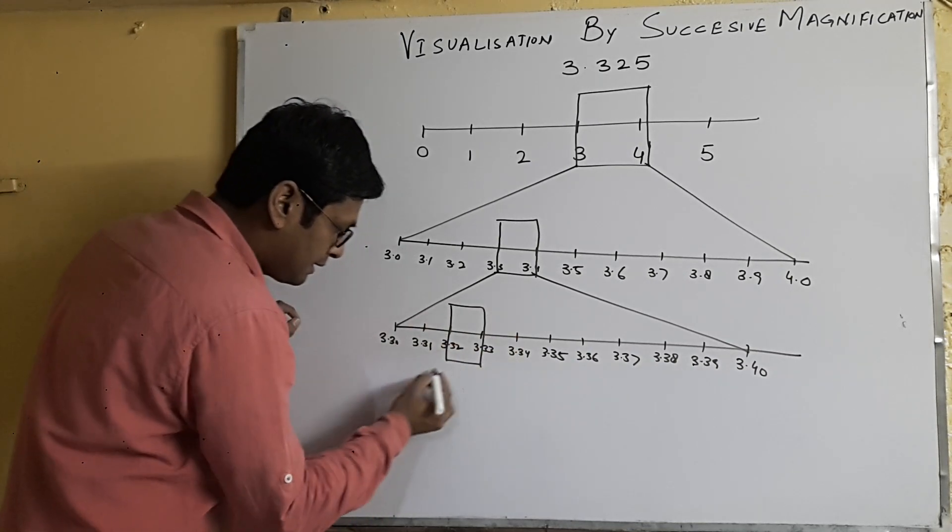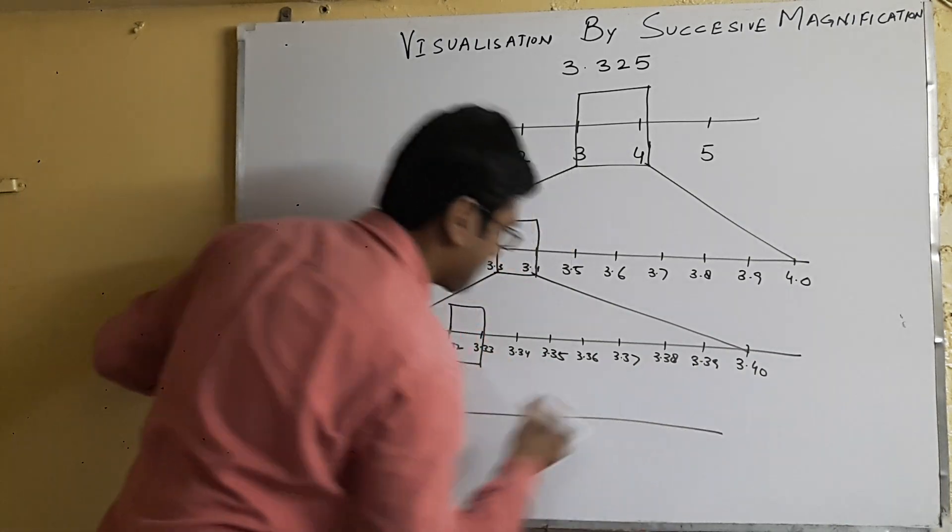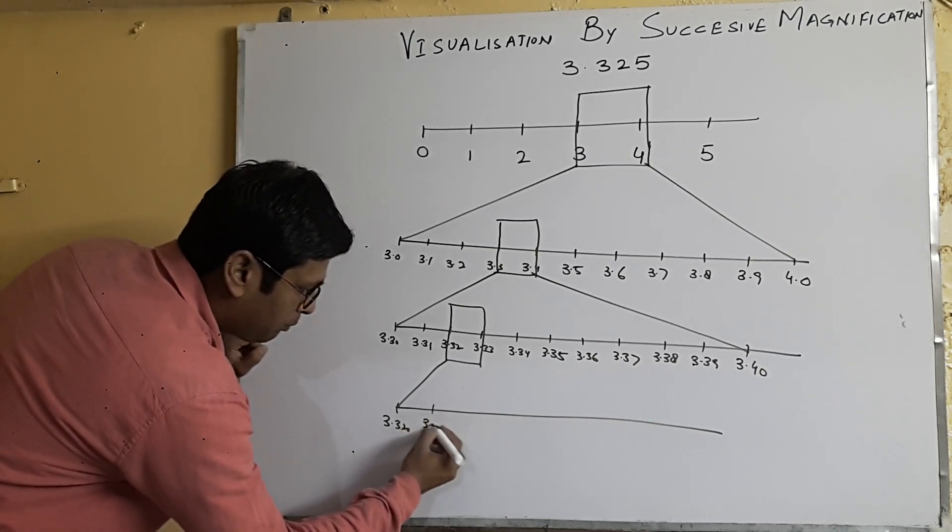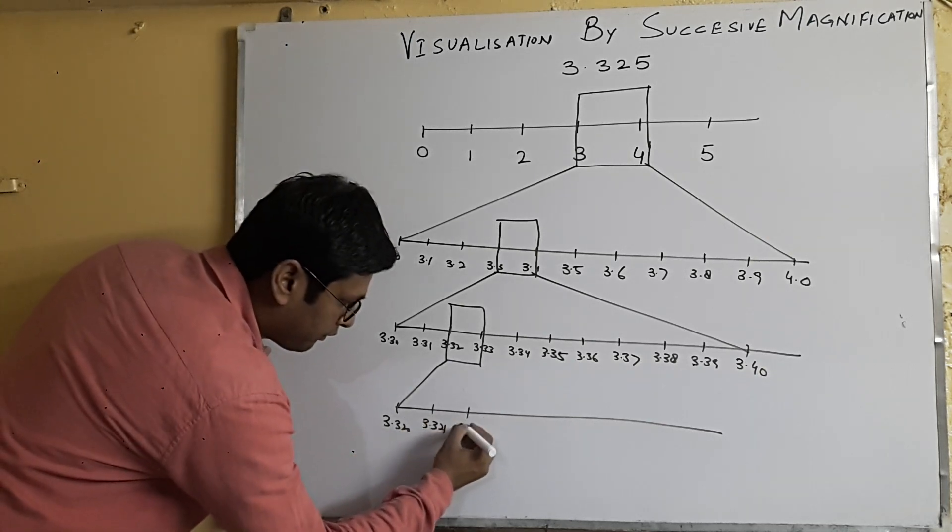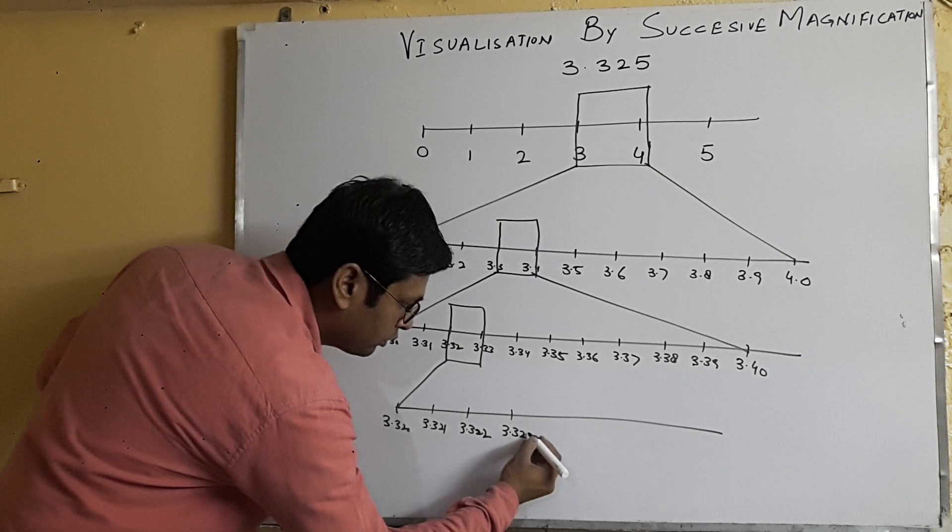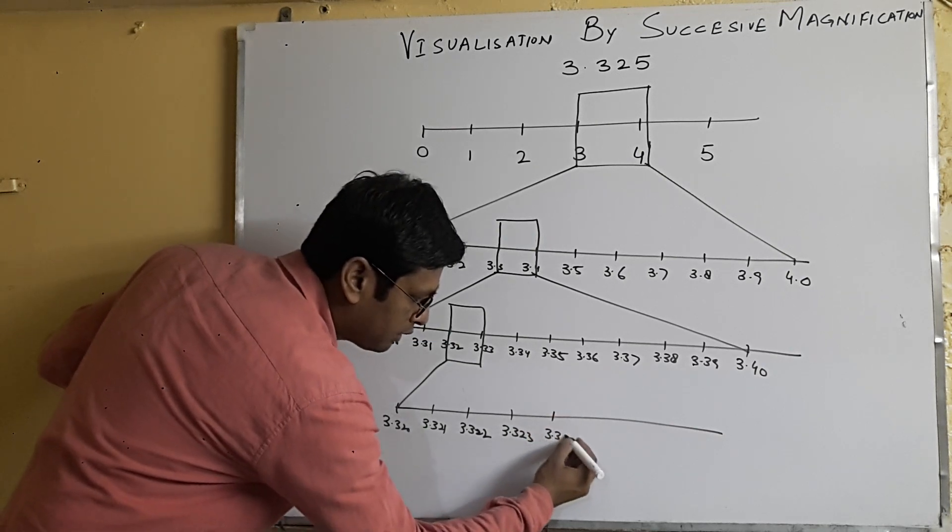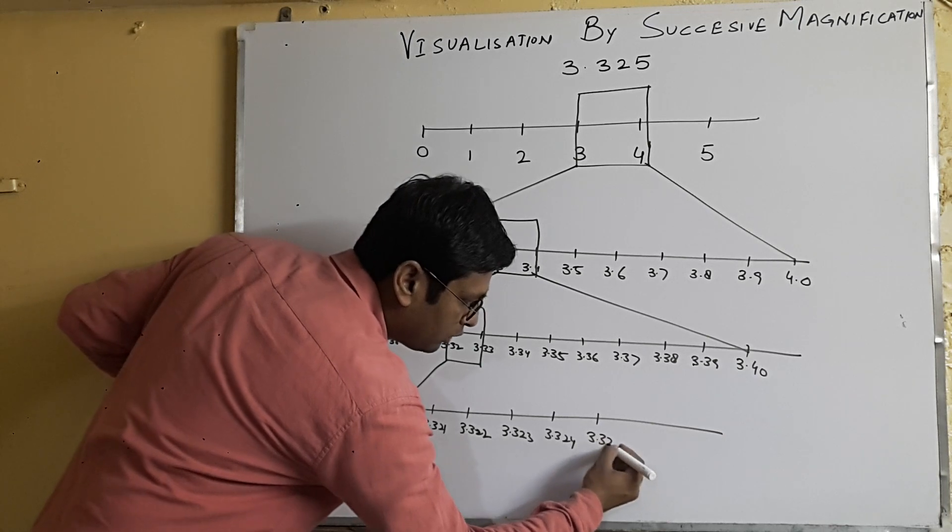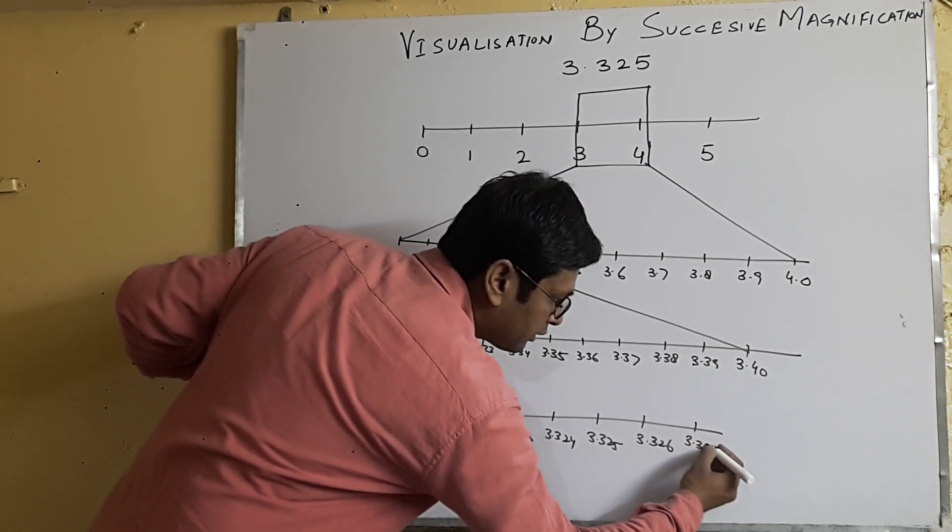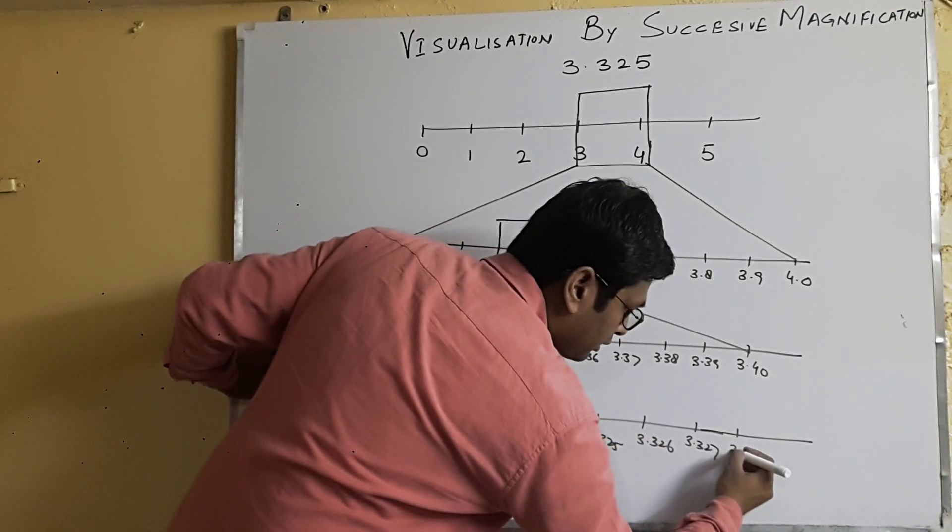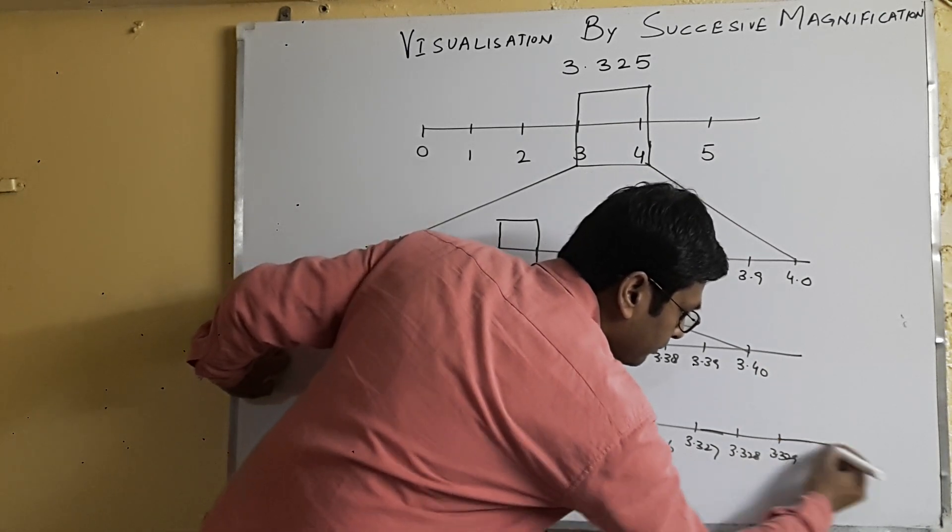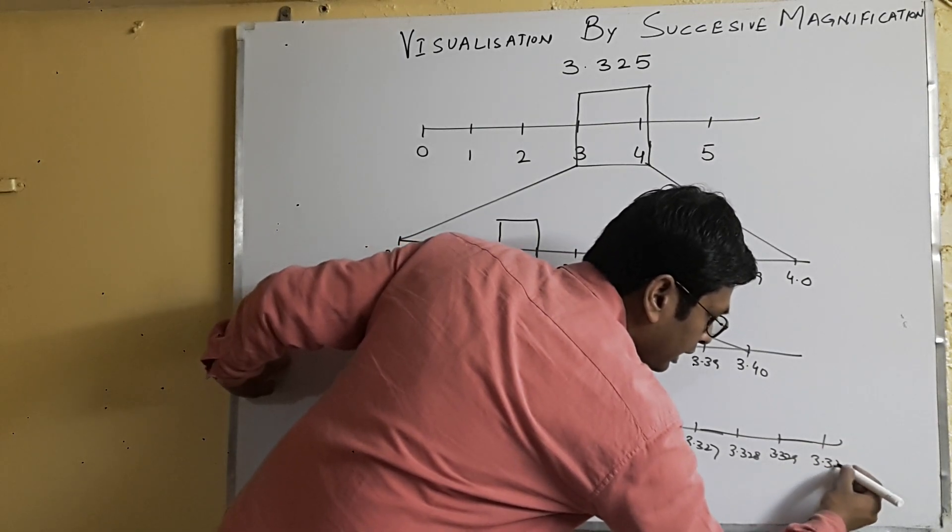And I will write: 3.320, 3.321, 3.322, 3.323, 3.324, 3.325, 3.326, 3.327, 3.328, 3.329, and 3.330.